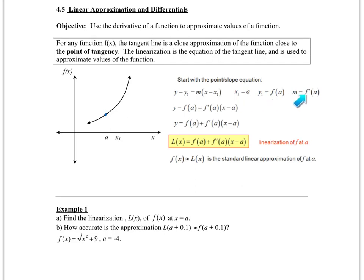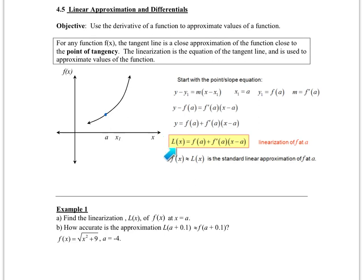Plugging these three things into the formula: it's y minus f of a equals f prime of a times the quantity x minus a. The big change for this section is we're going to add f of a over to the other side, which isolates y. We're going to call that the linearization, so instead of writing y we write L of x. This is used instead of finding function values — we can use the y values on the tangent line as an approximation.